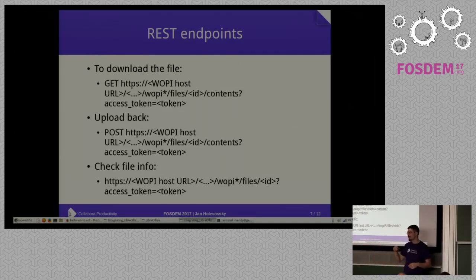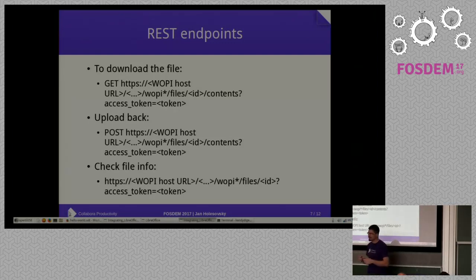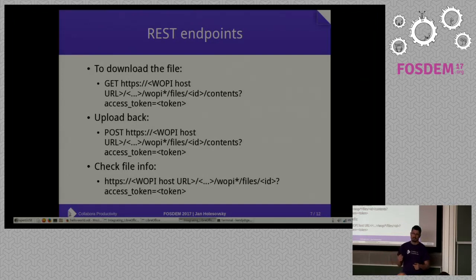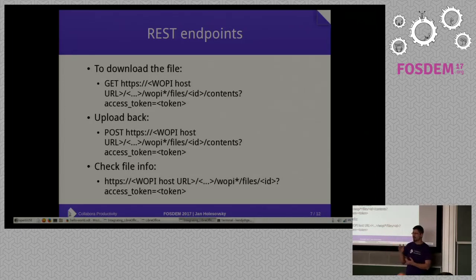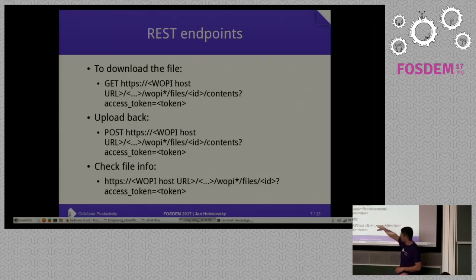The access token makes sure that the user actually has the right to access the data. It is issued by your web application that controls access. LibreOffice Online never asks for a password — it just uploads and downloads data, and it is the responsibility of your application that integrates LibreOffice Online to tell the WOPI client the access token. The WOPI client will then talk to the WOPI host, and in that case we know everything is authenticated and the user has the rights to access the document. Uploading is very similar — again a path with 'contents' and the access token.